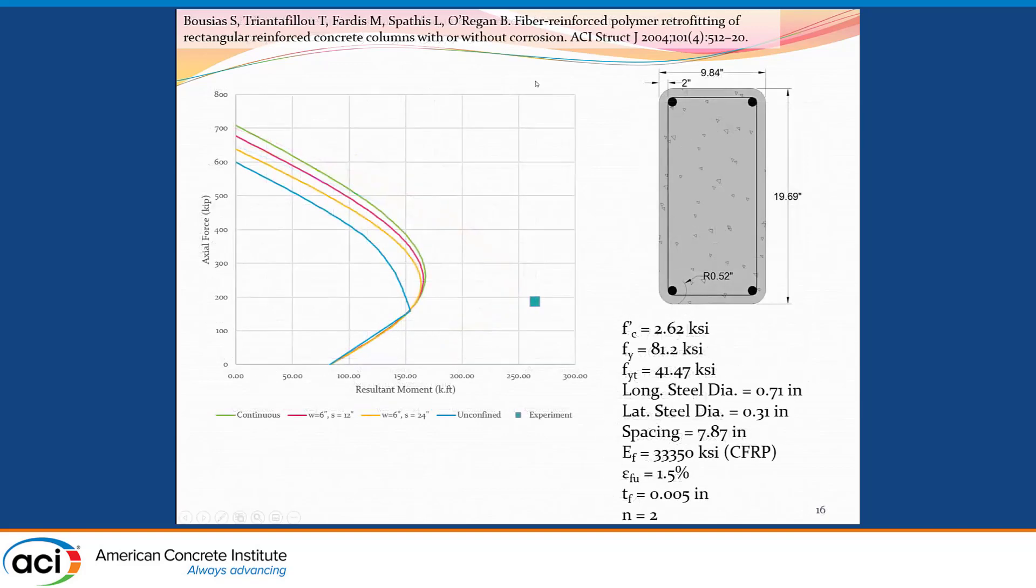Moving on to the next specimen. This was by Bosias et al., and it's for a rectangular section. We can see here the experimental point, which is outside our interaction diagram, which shows that this case we are conservative. And again, the important here is these two curves, which are inside, and we can see that the 12 inches is closer to the confined, and then the unconfined.